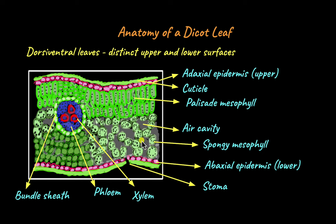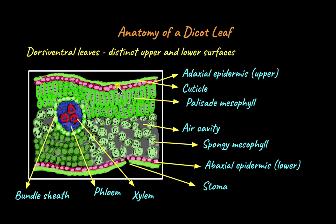This air cavity helps in the diffusion of gases in and out of the leaves. The stoma is the stomatal opening through which gas exchange takes place. In dicots, the stomata are found mainly on the abaxial surface or the lower surface of the leaves, and not on the adaxial or upper surface. In fact, some dicot leaves might not have stomata on their upper surface at all — whatever stomata they have, they will have only on the lower surface.